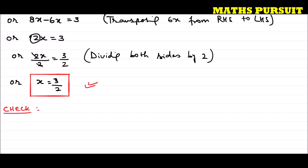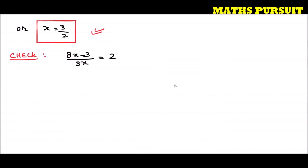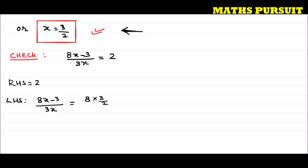The original expression given is 8x minus 3 divided by 3x, equal to 2. The right hand side is already 2, so now let us check the left hand side. Substituting x equals 3 upon 2: we get 8 into (3 upon 2) minus 3, divided by 3 into (3 upon 2).